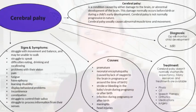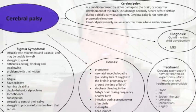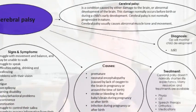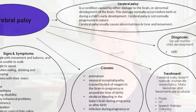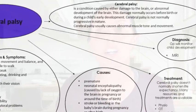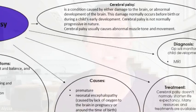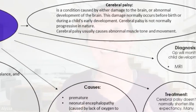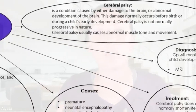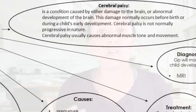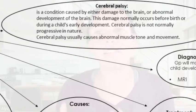So cerebral palsy — what is it? It is a condition caused by either damage to the brain or abnormal development of the brain. This damage normally occurs before birth or during the child's early development. Cerebral palsy is not normally progressive in nature and it usually causes abnormal muscle tone and movement.